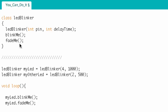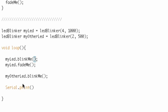Classes have functions, and those functions can be applied to instances of the class. To do that, you use the name of the instance followed by a period and then the function. And note that these functions can also take arguments — look at Serial.print, where you pass an argument to print, like print 'blah' or whatever.